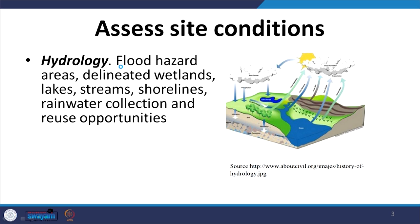The next parameter is hydrology — we have to understand the hydrology of the site. That includes flood hazard areas; we have to see where the nearest water body is and how much is the flood hazard. We have to ensure the site does not come in a flood plain and understand delineated wetlands, shorelines for coastal areas, and rainwater collection and reuse opportunities depending upon the topography assessment done.